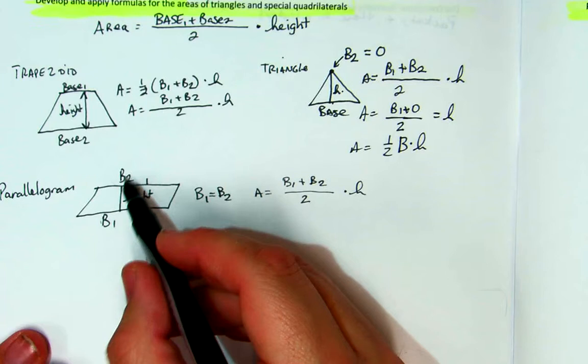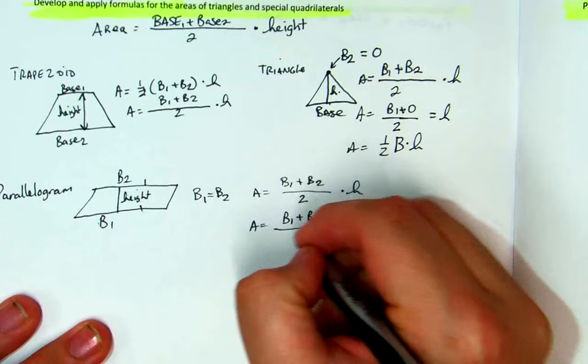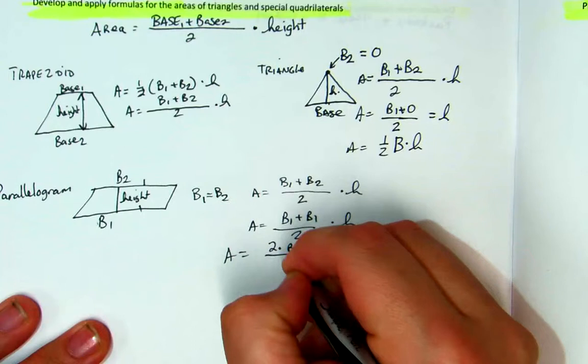And since these are equal, base 1 plus base 2, same kind of idea. This is really like base 1 plus base 1 over 2 times the height, which is really 2 times base 1 divided by 2 times the height. The 2's divide out.